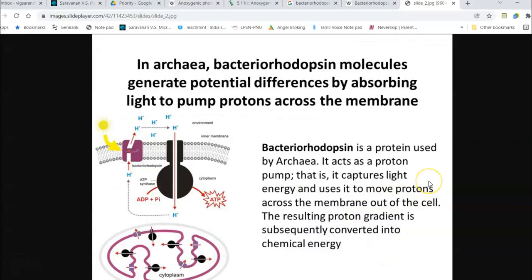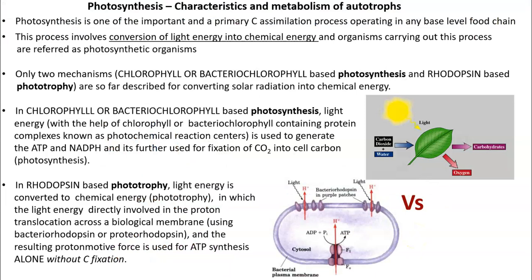In phototrophy, light energy is directly involved in proton translocation across a biological membrane with the help of a protein called bacterorhodopsin. This bacterorhodopsin is commonly present in archaea such as Halomonas selenarум. They have a bacterorhodopsin molecule that helps in generating the proton motive force required for ATP synthesis. The resulting proton motive force is used for ATP synthesis alone — for energy production — and is not used for carbon fixation. So energy production is happening without carbon fixation.